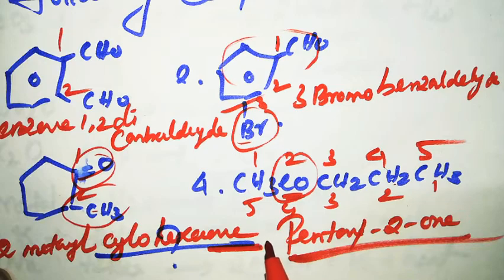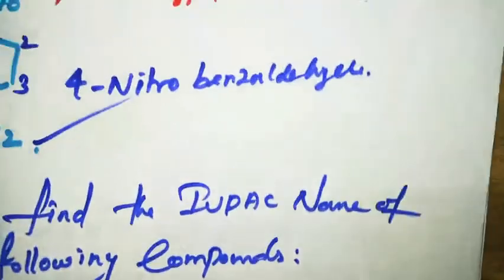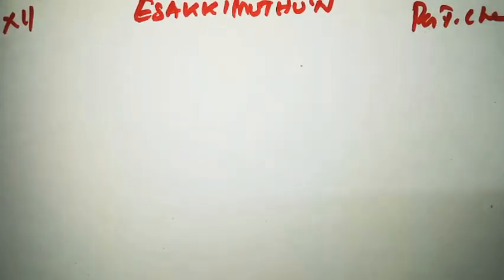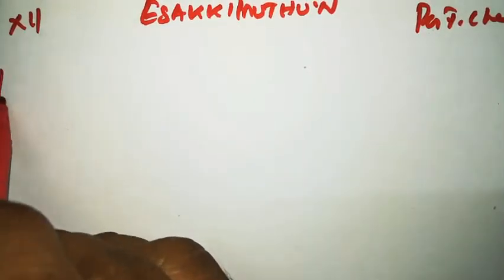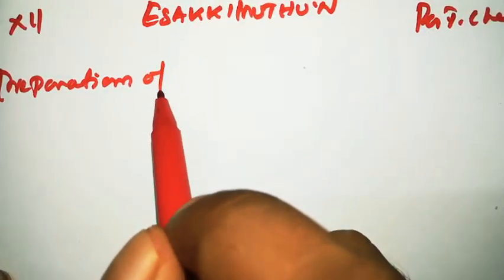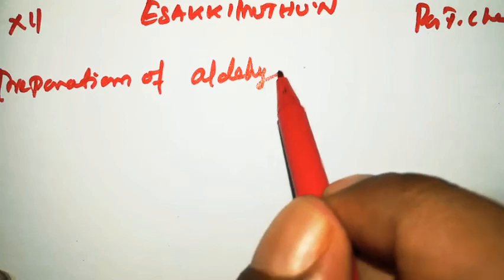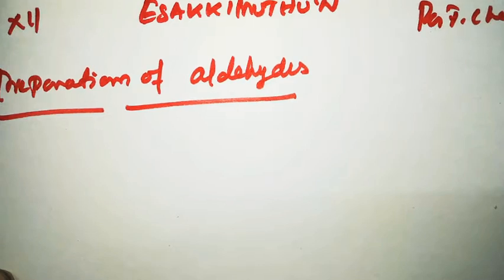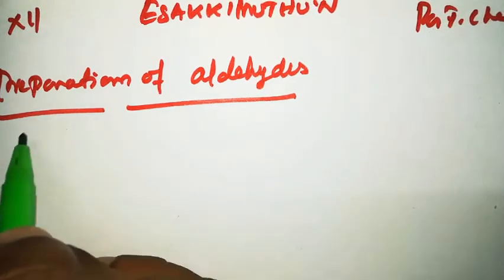Next is the chemical properties of aldehyde. But before that, one preparation method is introduced. Preparation of aldehyde — the first method is from acyl chloride, also called acid chloride.